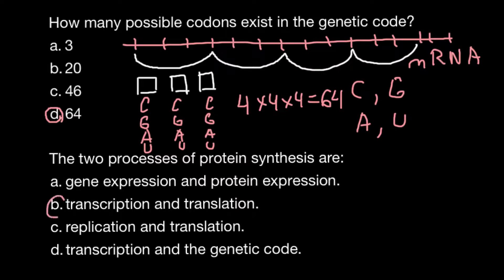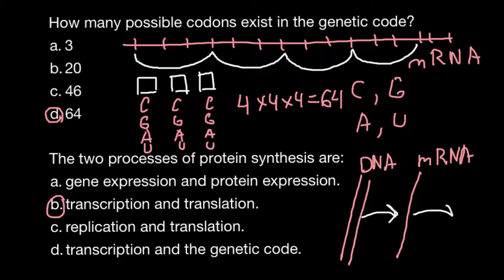So imagine that this is double-stranded DNA. DNA would be transcribed into messenger RNA, and messenger RNA would be translated into the protein chain.